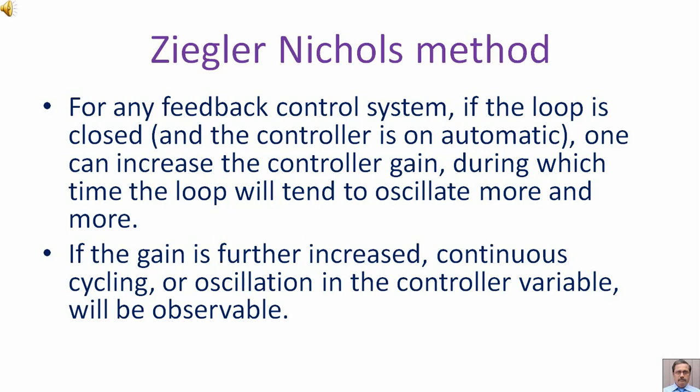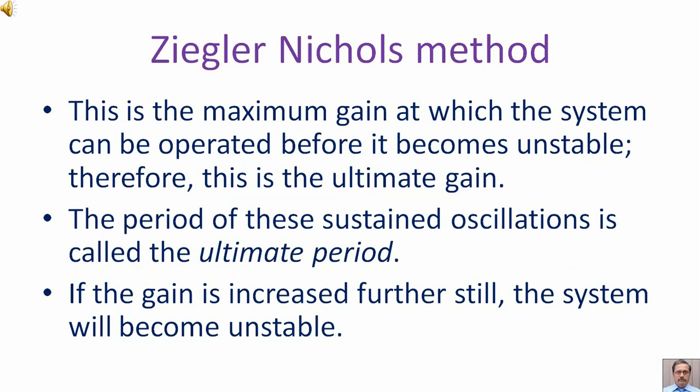If the gain is further increased, continuous cycling or oscillation in the controller variable will be observable. This is the maximum gain at which the system can be operated before it becomes unstable; therefore, this is the ultimate gain.